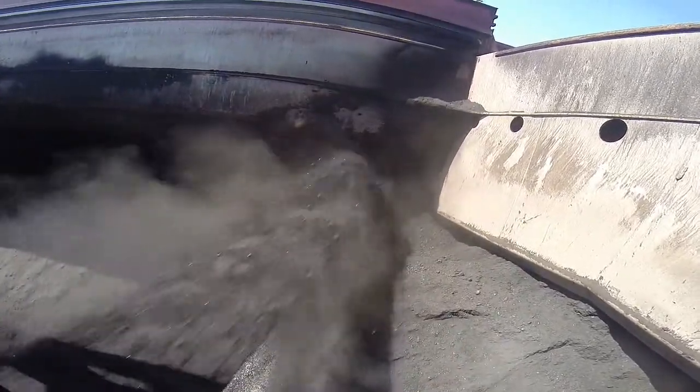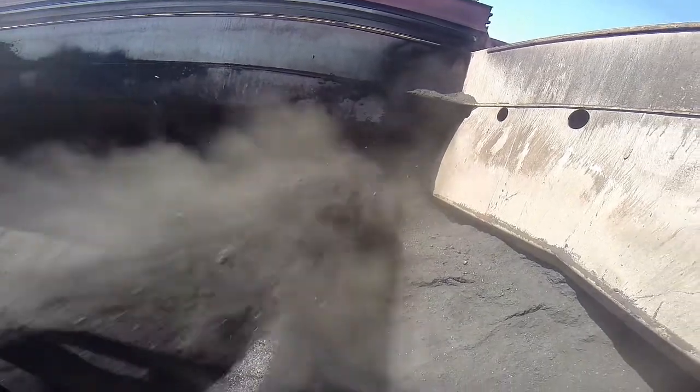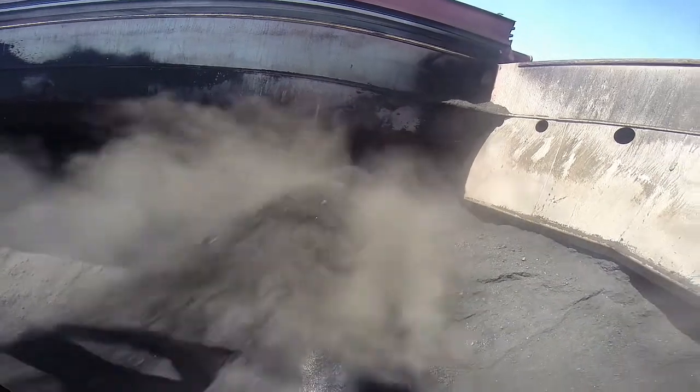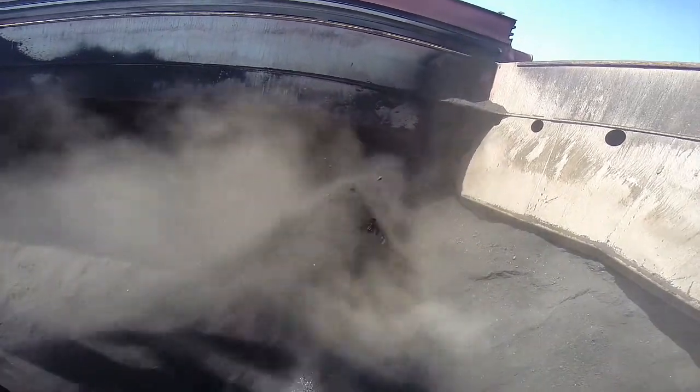When possible, move the trimmer close to the coaming to throw the coal under the wing as far as possible. Usually fill the four corners first, again watching the list of the ship.